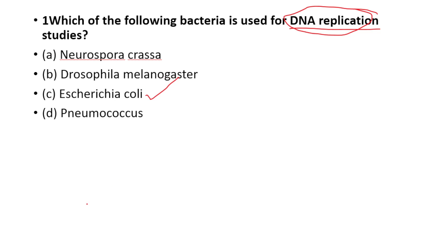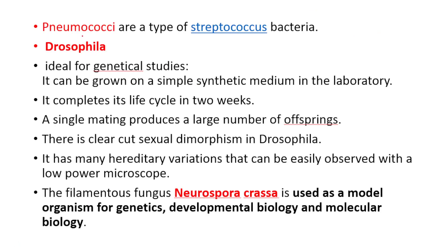Now we are going to learn how to connect these things. Pneumococcus is a type of Streptococcus bacteria — that means Gram-positive Streptococcus bacteria. Drosophila is ideal for genetical studies; it can be grown on simple synthetic medium in the laboratory and completes its life cycle in two weeks.